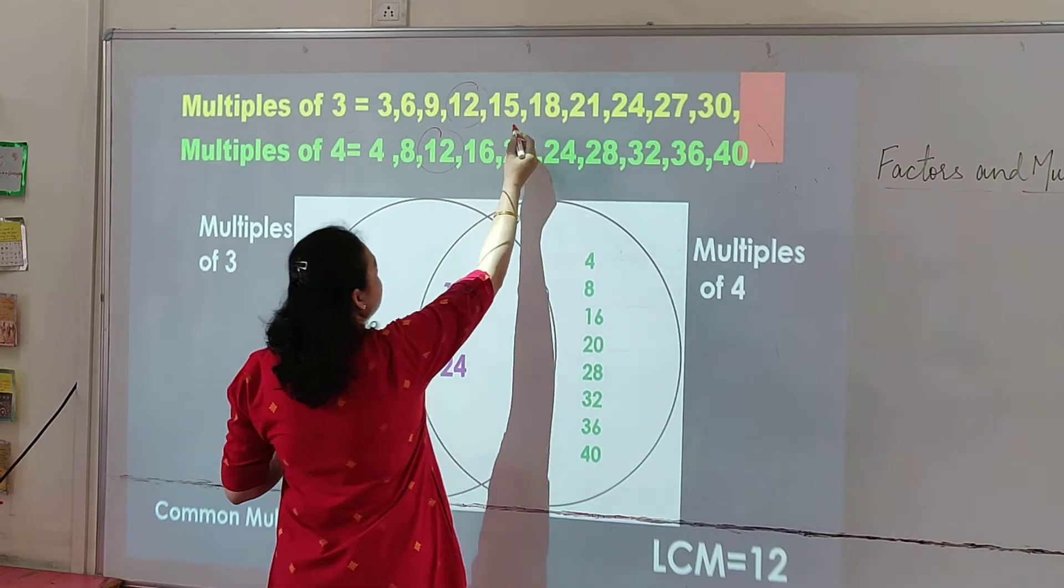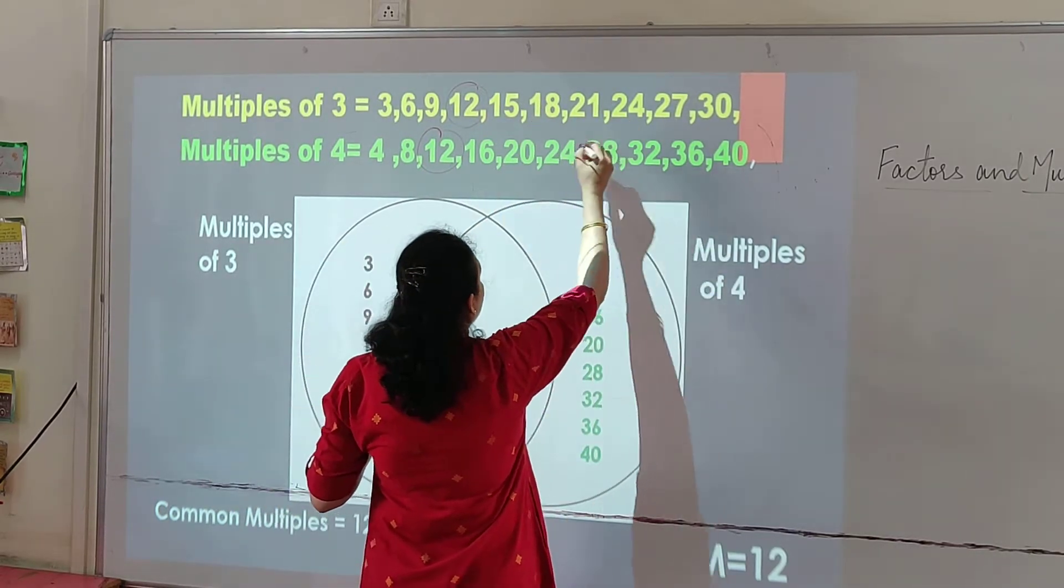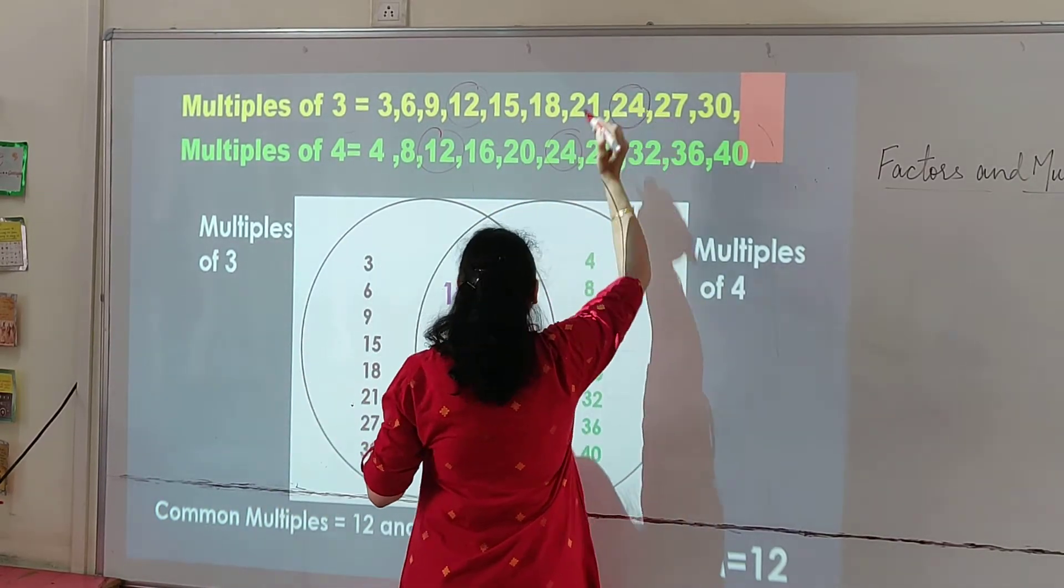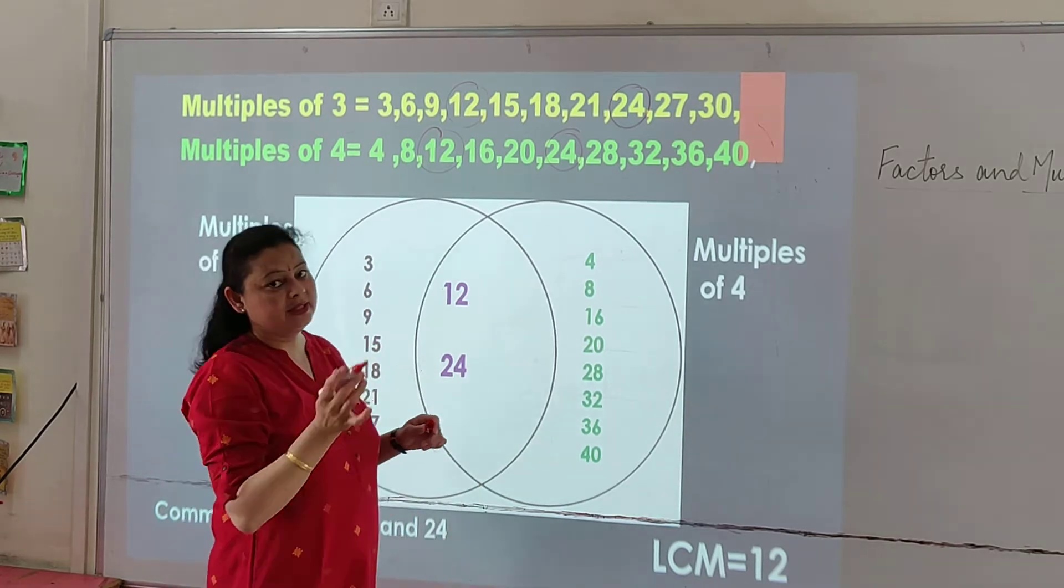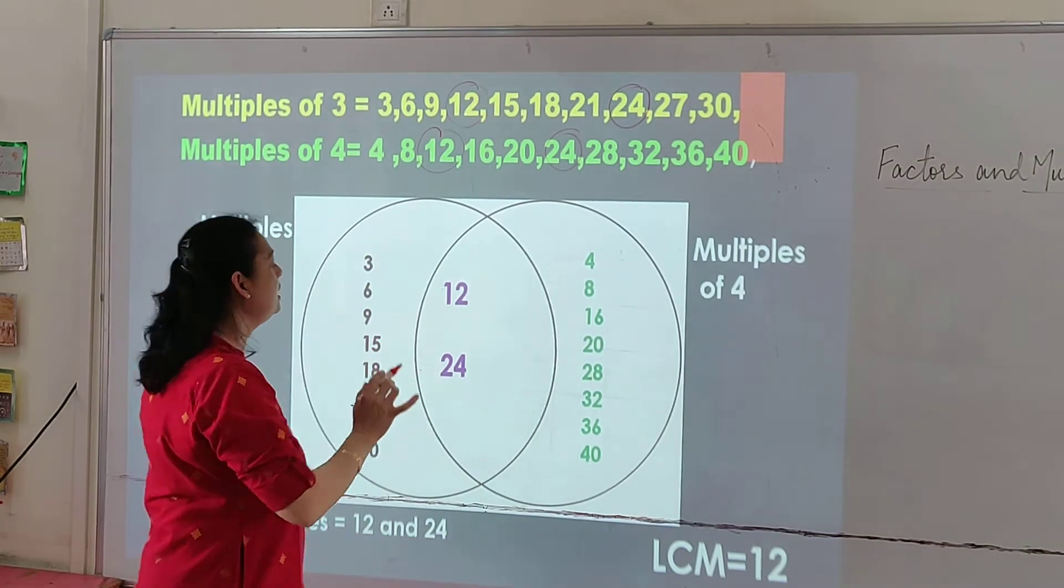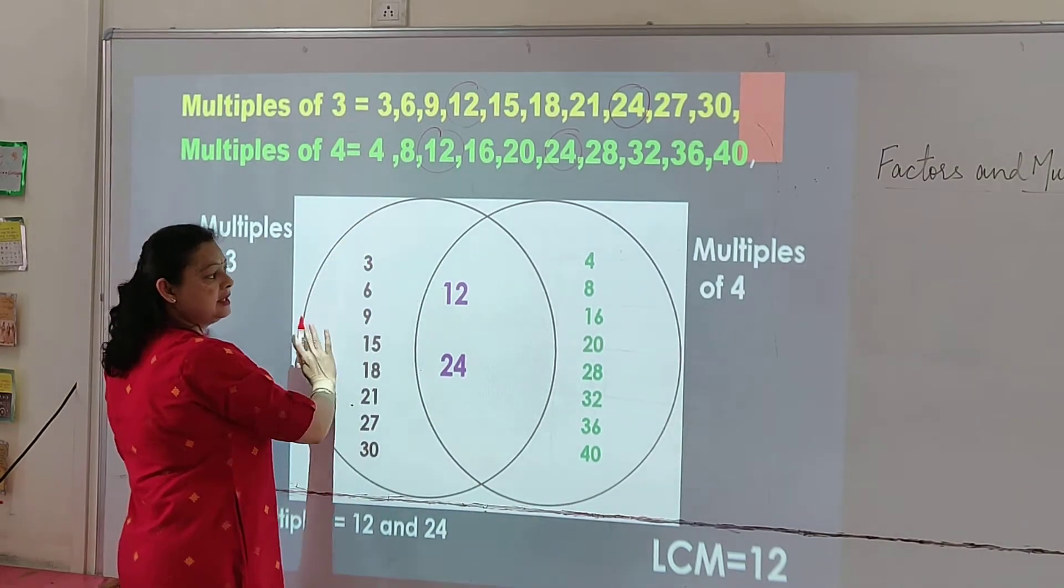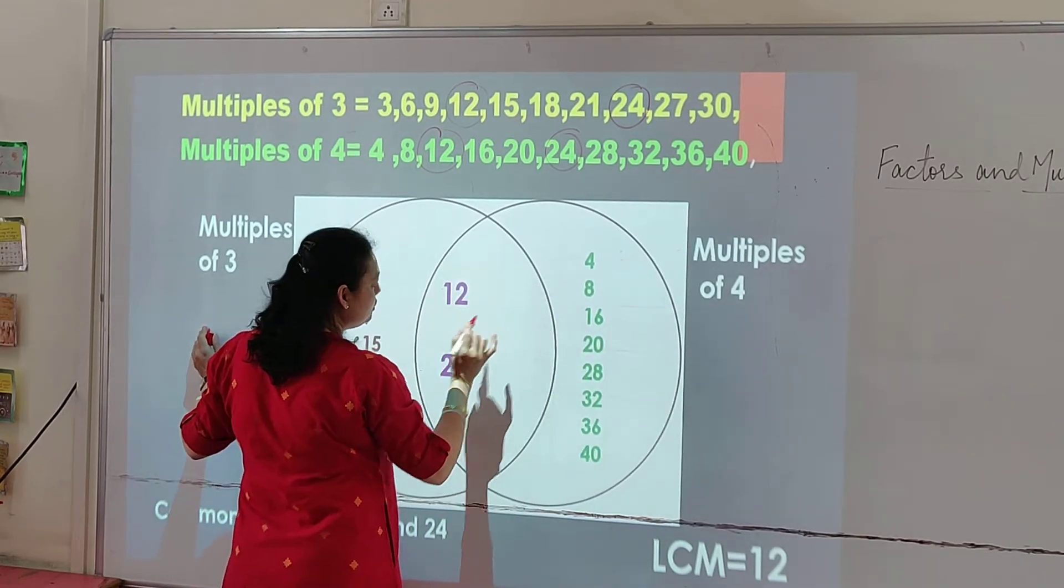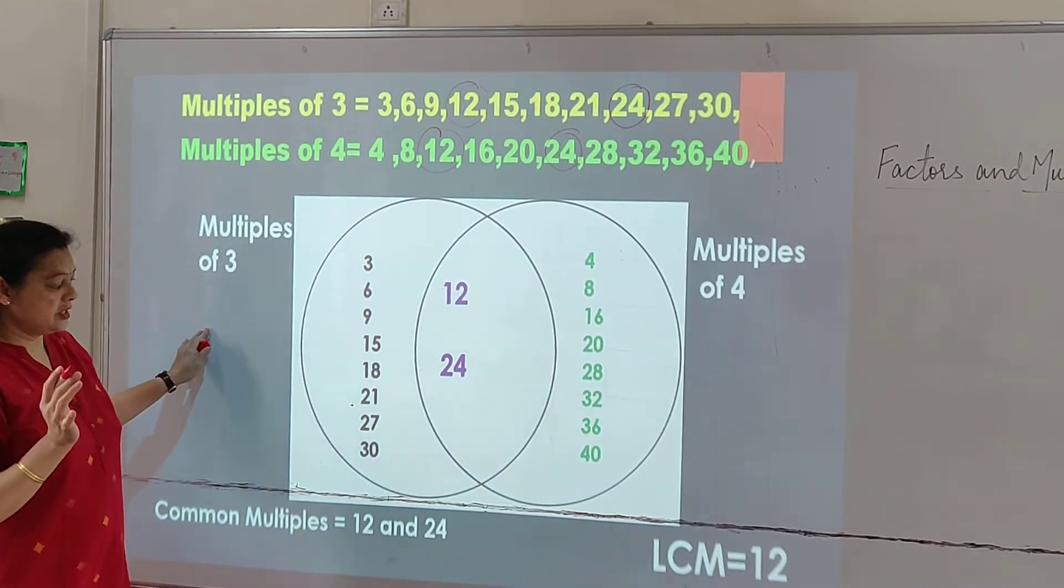We will write it in the centre. 15, 18, 21, 24. Yes, we got the second multiple also. So we write it in the centre. Do we have any other multiple common? No, we don't. So we will write the remaining ones in the different columns. And we got 2 multiples common: 12 and 24.